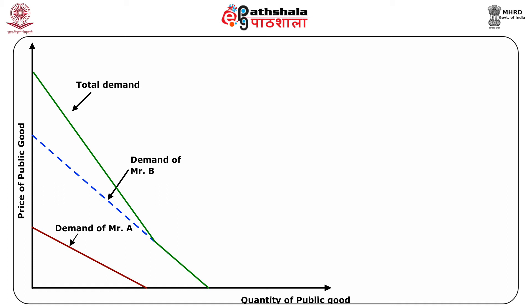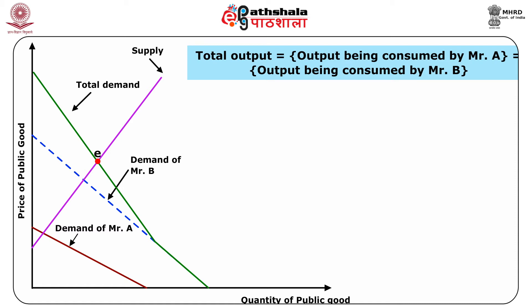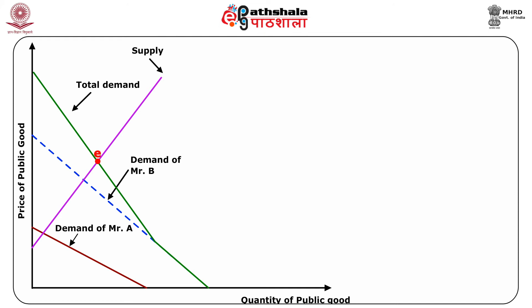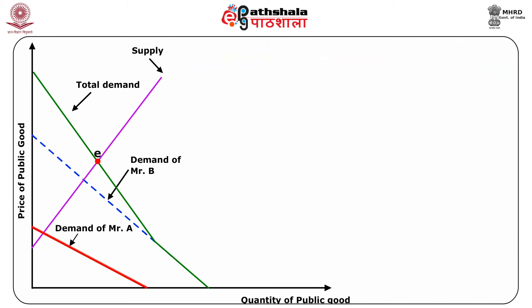We assume a normal upward-sloping supply curve. The demand curve intersects the supply curve at point E. Total output produced will be equal to output consumed by Mr. A, which will also equal output consumed by Mr. B. Point E shows both the total quantity of public good to be produced and the total price of the public good. Therefore, price of the public good equals price paid by Mr. A plus price paid by Mr. B. Individual demand curves indicate each person's contribution toward the total cost. However, these are pseudo-demand curves, and a social good is not sold in the market, so very little information is available on the slope or position of such curves.